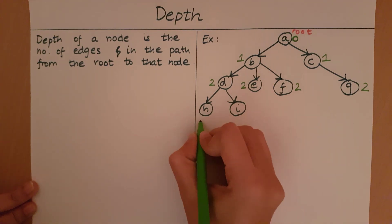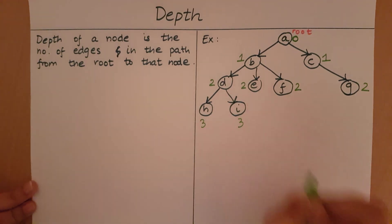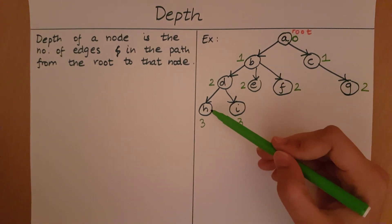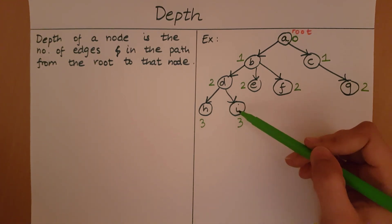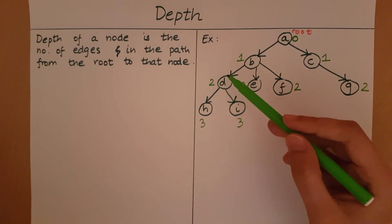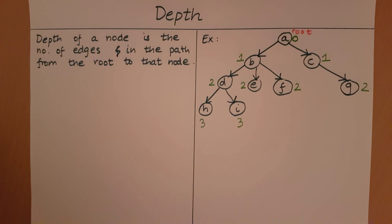When we come to H and I, the number of edges from A to each of them is three. As you can see, the depth of a child node is one more than the depth of its parent. H and I are children of D, and their depth is three, which is one more than D's depth of two. This is because if it takes a certain number of edges to reach the parent, it only takes one more edge to reach the child — the edge between the parent and the child.